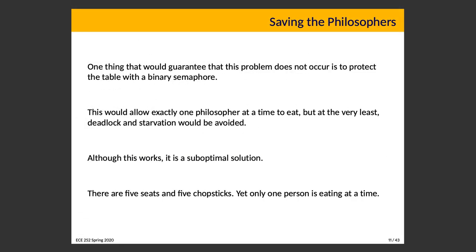So here's a thing you can do: hire a bouncer. This large and intimidating individual just stands in the way and allows exactly one person at a time to go to the table. This allows exactly one philosopher at a time to eat; when their turn is up, they put the chopstick down and leave. The next philosopher shows up and takes their seat, and so on. It guarantees that we will not have a deadlock and it guarantees we will not have starvation. It is a solution — not a good solution, we could do better, but it is a solution if the only things you need to do are avoid those two problems.